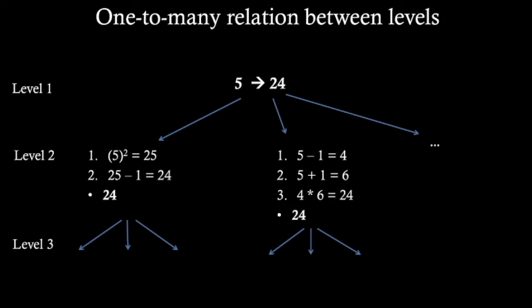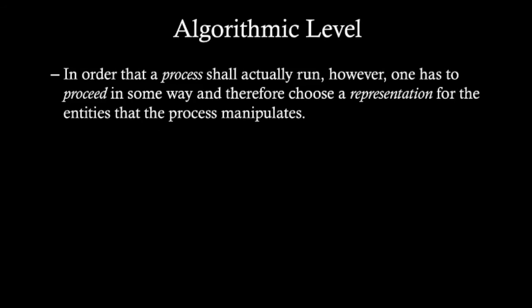The algorithmic level also has to make explicit a kind of representation. We have to choose a representation for the entities that the process manipulates. What are the units that are going to be manipulated by the algorithm?